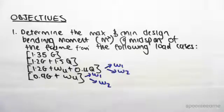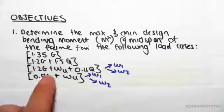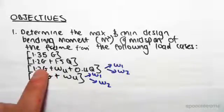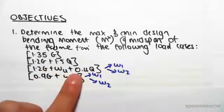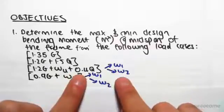Hey guys, the objective with this video is to determine the maximum and minimum design bending moment, which we call M star, at mid-span of the frame from the following load cases: 1.35G, 1.2G plus 1.5Q, 1.2G plus wind plus 0.4Q where we need to look at wind 1 and wind 2, and 0.9G plus wind where we need to be looking at wind 1 and wind 2.